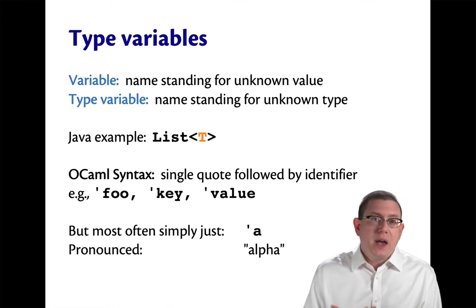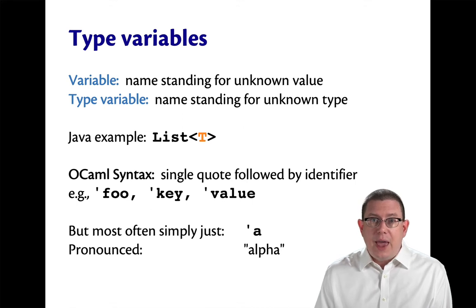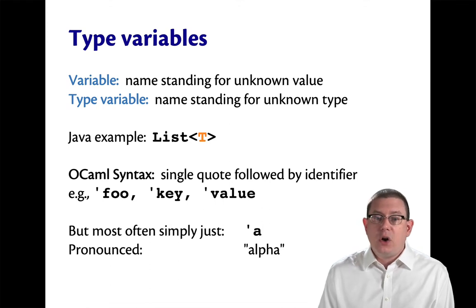You've seen this kind of feature before in Java. The angle bracket t in list t in Java is a way of parameterizing on a type. That name t stands for an unknown type in the list class.